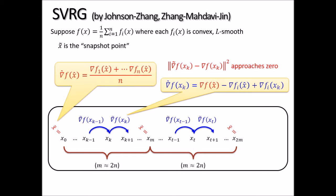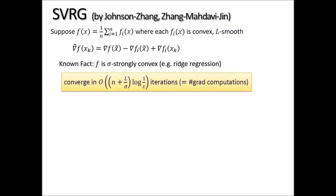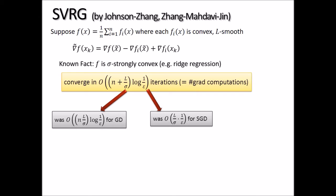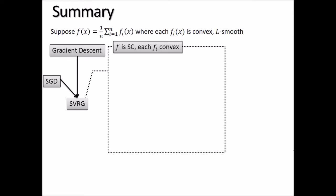That is the high-level summary of SVRG. In terms of convergence rate, the original SVRG paper proved that if f is strongly convex with parameter sigma, it converges faster than both gradient descent and SGD. In our paper, we open up the box of SVRG to provide convergence theorems that the original SVRG method cannot achieve.